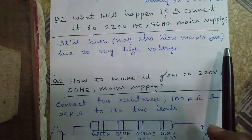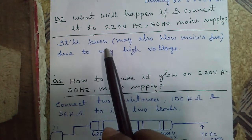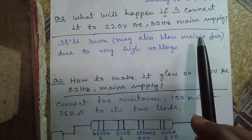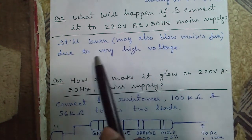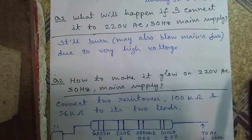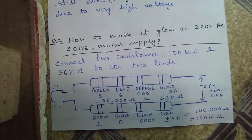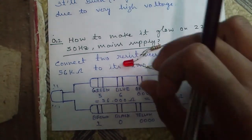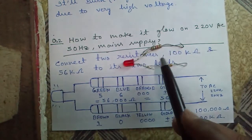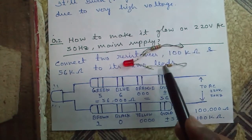Now, what will happen if I connect an LED to 282V mains? It will burn due to very high voltage. To make it glow on 282V, you have to connect two resistances to it.